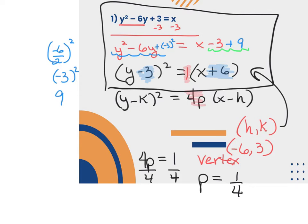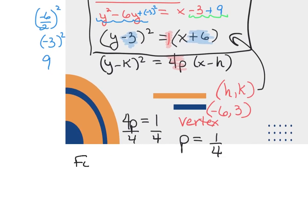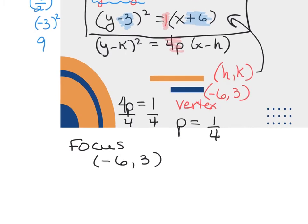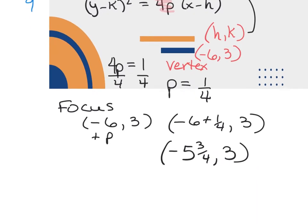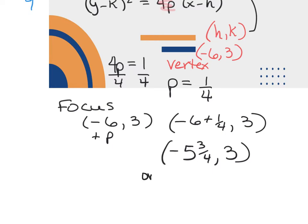To find the focus point, I take the vertex and add p to the non-squared variable — which is x here. So the focus is negative 6 plus 1/4, comma 3, which equals negative 5 and 3/4, comma 3. WebAssign may expect an improper fraction, so you could also enter this as negative 23 over 4, comma 3. Since I'm graphing, the mixed number is easier for me.